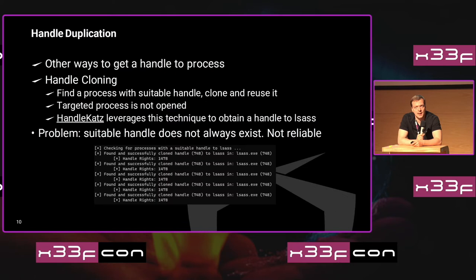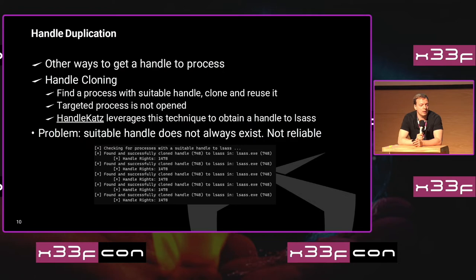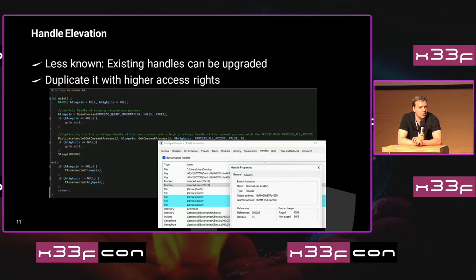A probably better way is to make use of a concept called handle duplication. The observation is that there may already be a process holding a handle on the process you're trying to inject into. You open that other process, duplicate or steal the handle from it, and then reuse it — shifting the problem away from opening the target process directly. Last year I released a tool called HandleCats which leverages this technique to obtain a handle to LSASS, bypassing a bunch of security products because there's no process access event on LSASS. However, a suitable pre-existing handle is not always available, so it's not really reliable.